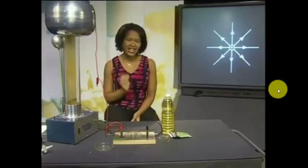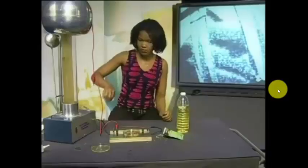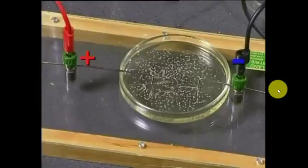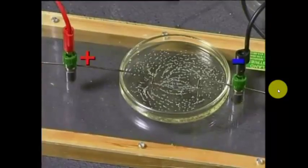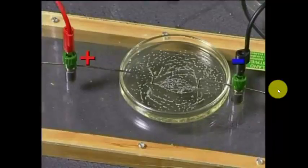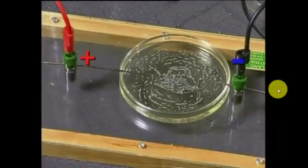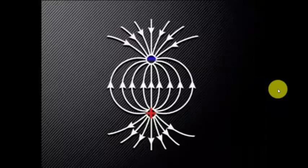In our third experiment, we're going to find out what the electrical field between two oppositely charged conductors looks like. Two conductors are placed near each other in a dish of oil — one positively charged and the other negatively charged. Try to draw the pattern that you see, and don't forget to put arrows on the electric field lines. Was your drawing like this one? If it is, well done — I think you may just be getting the hang of this.